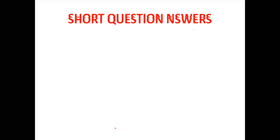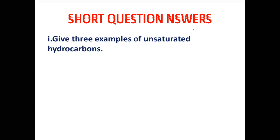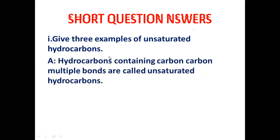Coming towards question number 2, short question answers. Short question answer number 1: give three examples of unsaturated hydrocarbons. Unsaturated hydrocarbons are those hydrocarbons which contain multiple bonds — carbon-carbon double bond and carbon-carbon triple bond. Carbon-carbon double bond compounds are called alkenes, and carbon-carbon triple bond compounds are called alkynes. There are two types: alkenes and alkynes.